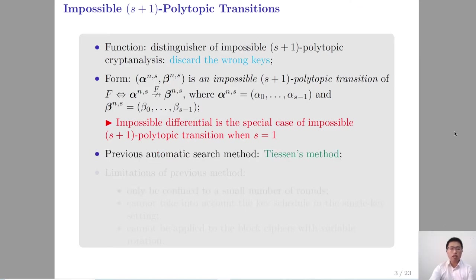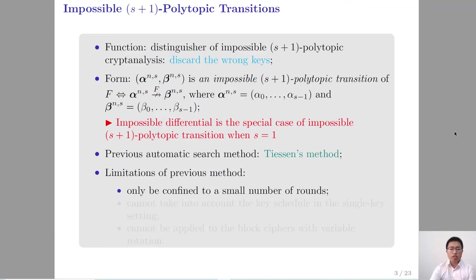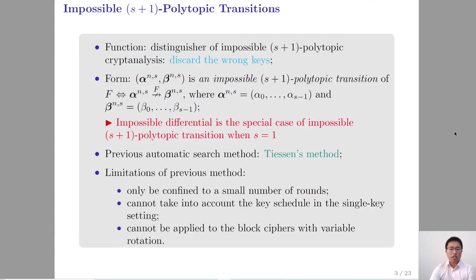For the automatic search tools, only one prior proposal exists. However, this method can only be confined to a small number of rounds. Meanwhile, this method cannot take into account the key schedule in a related-key setting, and cannot be applied to block ciphers with variable rotation.